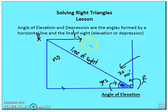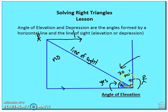This leads into angle of elevation and depression. The angle of elevation is the angle made between the horizontal and the line of sight from the observer upward to the observed. Angle of depression is the angle made between the horizontal and the line of sight looking downward. Because the two horizontal lines are parallel, alternate interior angles are congruent, so the angle of depression and the angle of elevation in this scenario are equal.